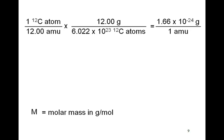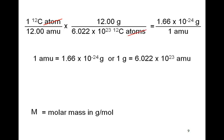And we got that by taking the fact that one carbon-12 atom has a mass of 12 AMUs and that one mole of carbon atoms, 6.022 times 10 to the 23rd carbon-12 atoms, has a mass of 12 grams. The units cancel and we get 1.66 times 10 to the negative 24th grams per 1 AMU. So, 1 AMU is equal to 1.66 times 10 to the negative 24th grams or 1 gram is equal to 6.022 times 10 to the 23rd AMUs.